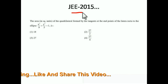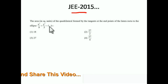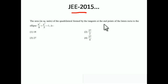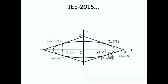This is from JEE 2015 — a very good question. We have to find the area in square units of the quadrilateral formed by the tangents at the endpoints of the latus rectum of the ellipse x²/9 + y²/5 = 1. I draw the ellipse here; there are two latus recta with their endpoints, and when we draw the tangents, we get a quadrilateral whose area we need to find.